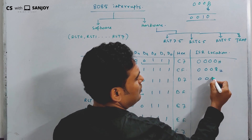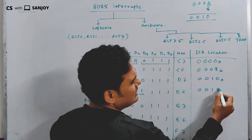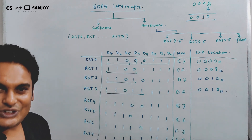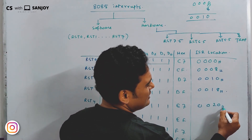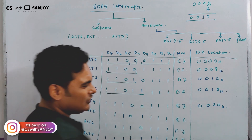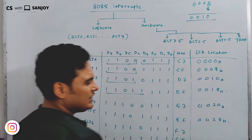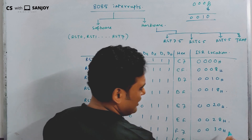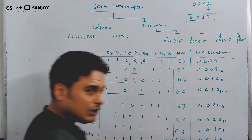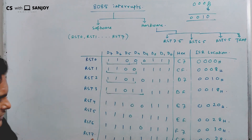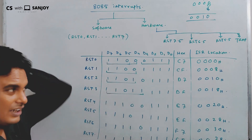The ISR address for RST1 is 0008H. RST2 is 0010H. RST3 is 0018H. RST4 is 0020H. RST5 is 0028H. RST6 is 0030H. RST7 is 0038H. Each address increments by 8 (16 in decimal, carry over in hex).